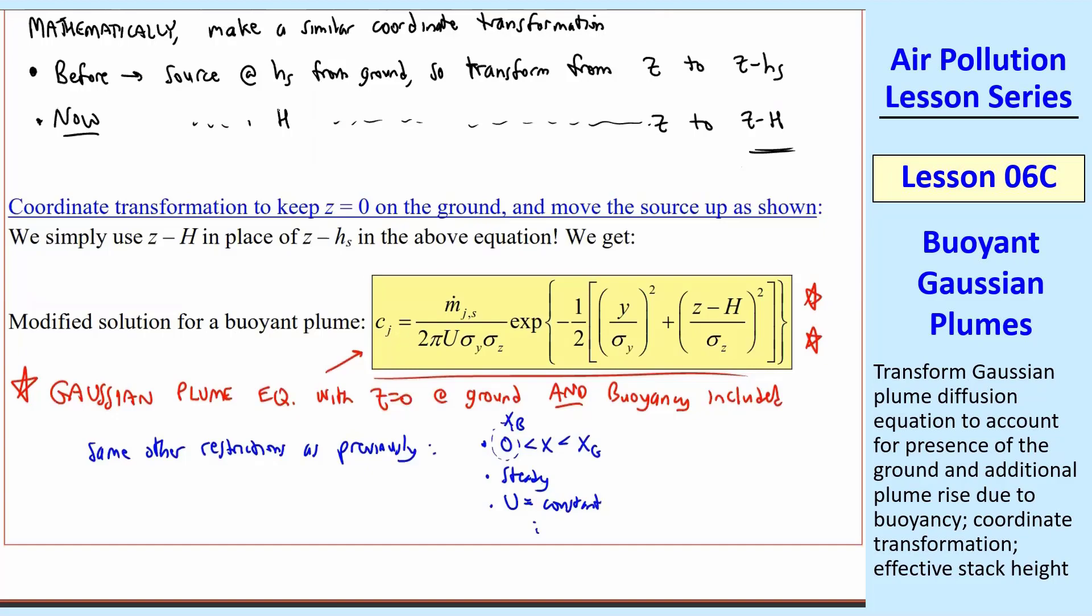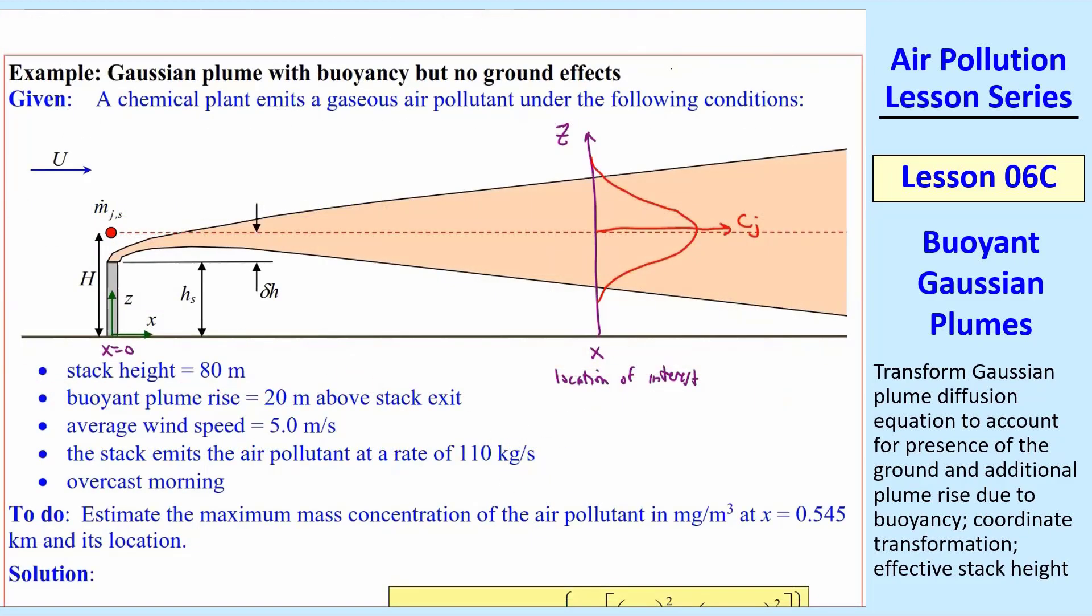So now we're ready for an example problem. A chemical plant emits a gaseous air pollutant under the following conditions. Stack height is 80 meters, so we call that HS. The buoyant plume rise is 20 meters above the stack exit. I'll call that our delta H. And then we can combine these and get our H. Capital H is HS plus delta H. So that would be the 80 plus the 20, or in this case, 100 meters. So the effective stack height above the ground due to buoyancy and the stack height is 100 meters.